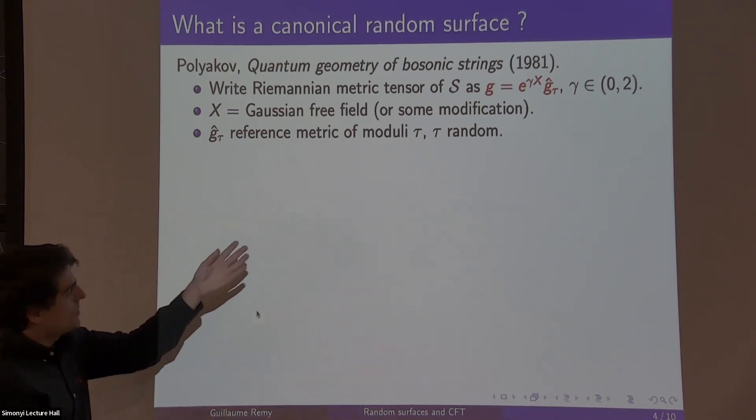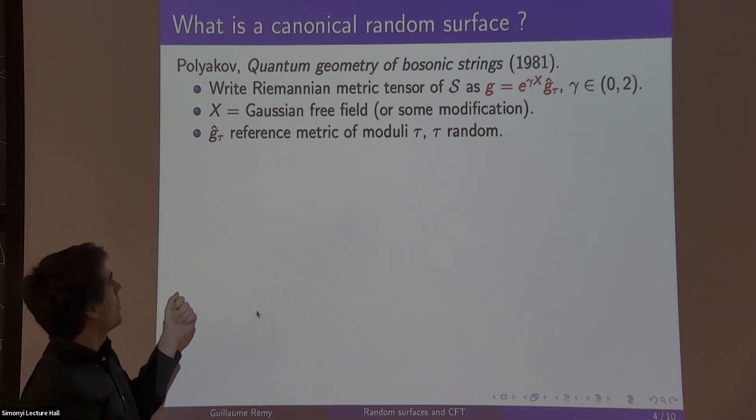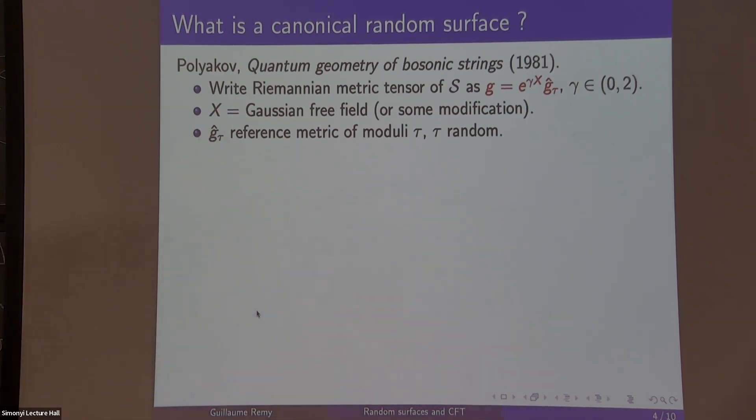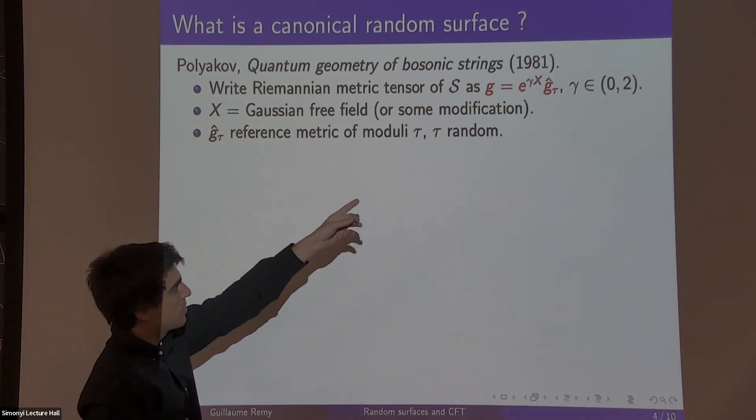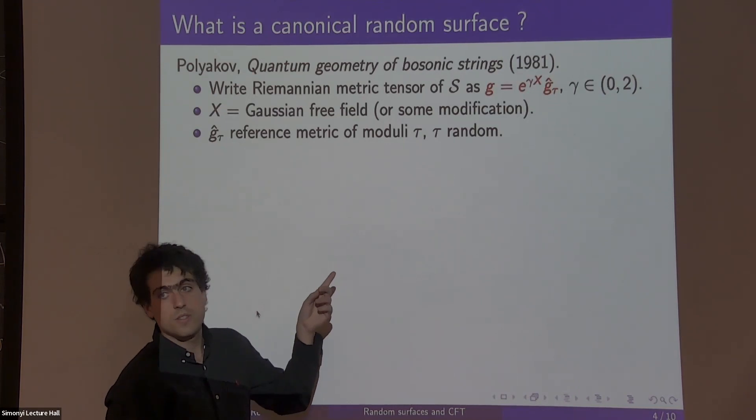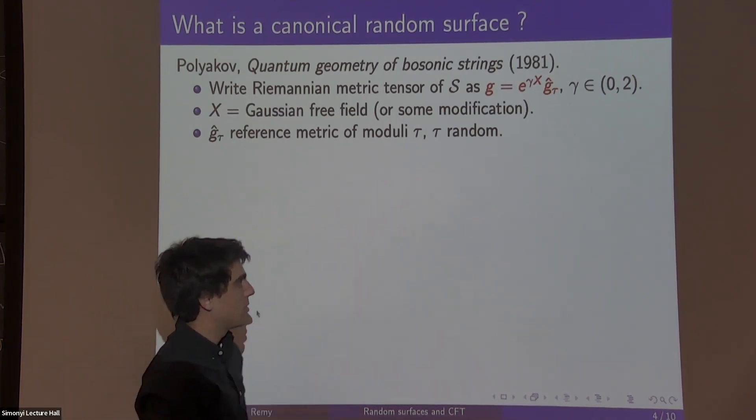If you have the Riemann sphere, then think of g hat as the fixed spherical metric. But if there is moduli, then this g hat tau parameterizes the moduli space. To make it random, you're going to take this function x in the conformal factor to be your Gaussian free field. There's also a gamma parameter in 0, 2.